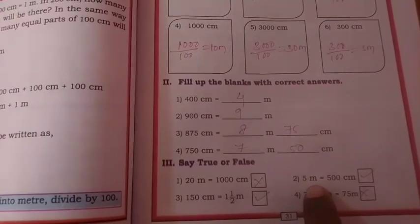The second one: 5 m converted to cm. 5 m equals 500 cm, which is right.